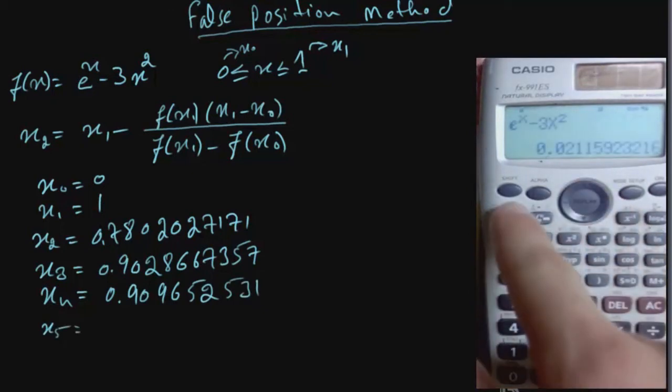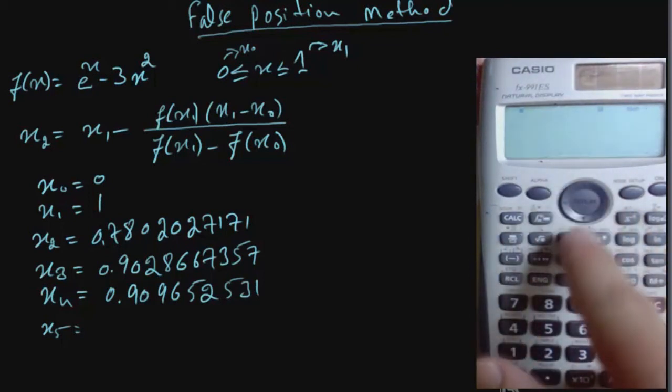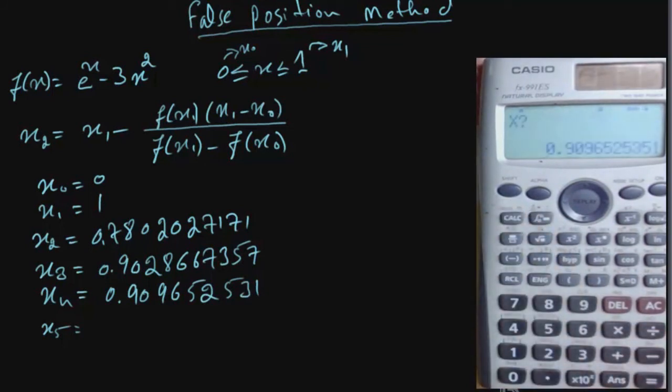And to find x5, bring the function, press calc, enter the ans, which mean x4. And there you see, it's positive again. So the function value at x4 is positive once more. When I press calc, press equal, press equal again, we got x5 is 0.909999.